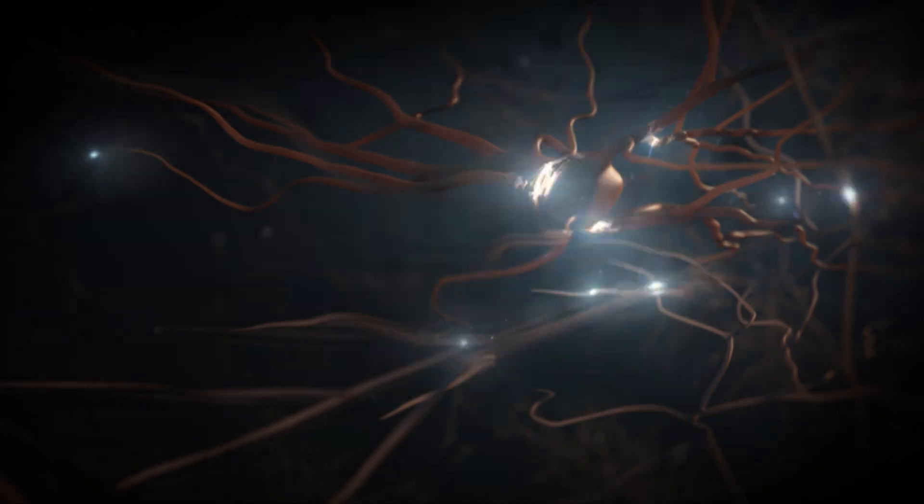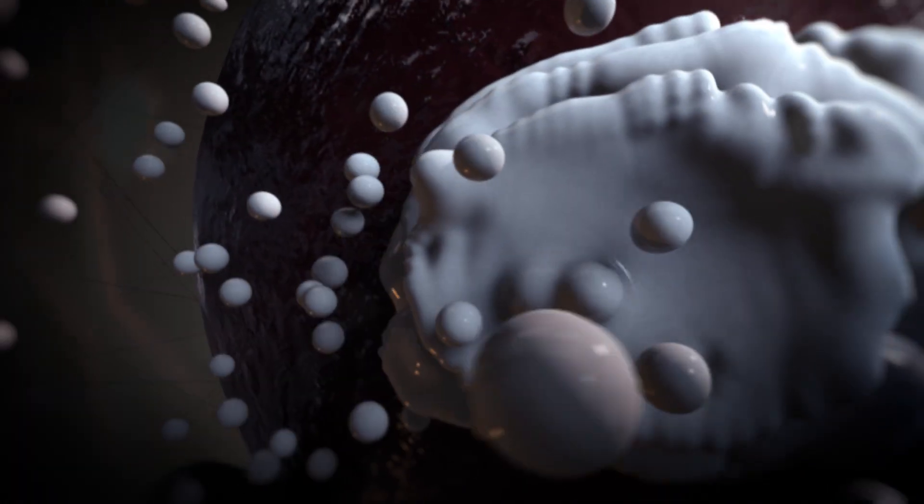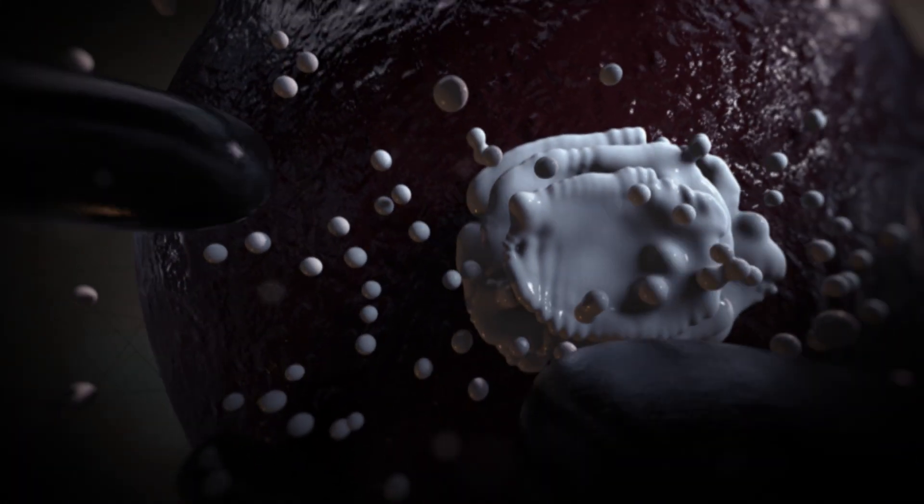But how does a presynaptic cargo, for example made in the cell body, end up at the right place within the cell? For this, neurons use active transport to sort specific synaptic proteins between the axon and dendrites.